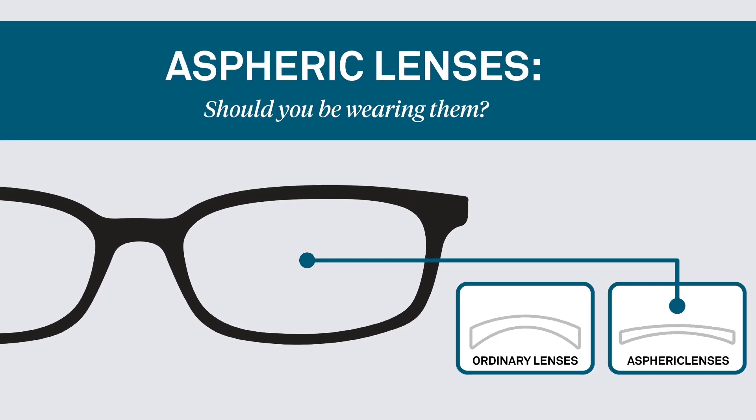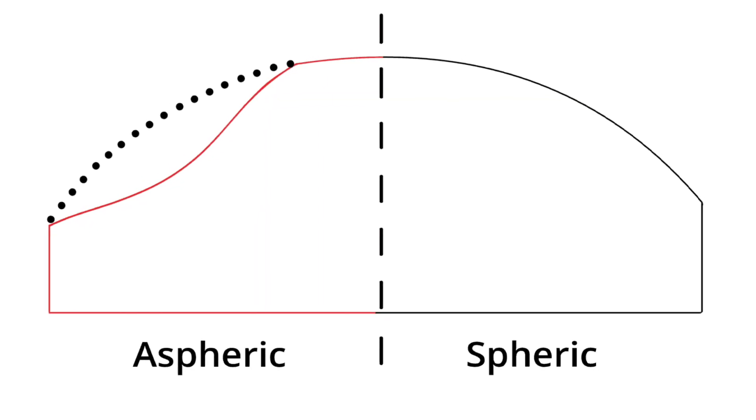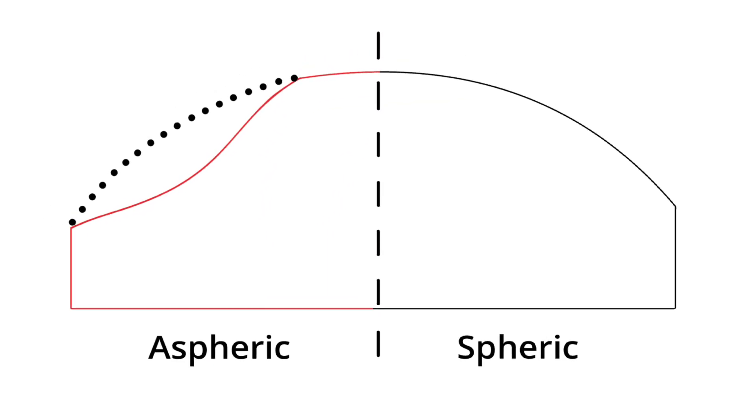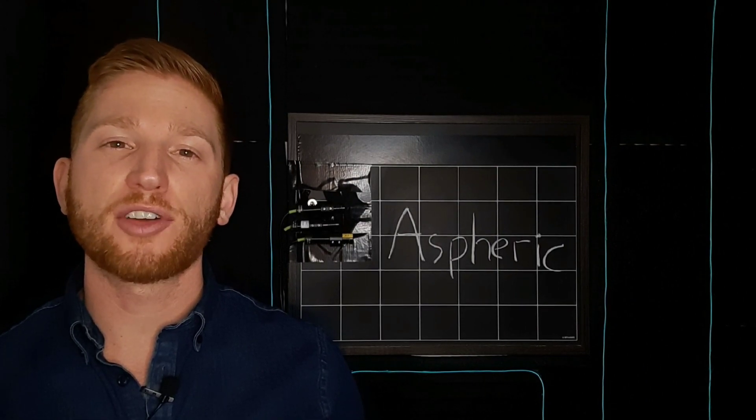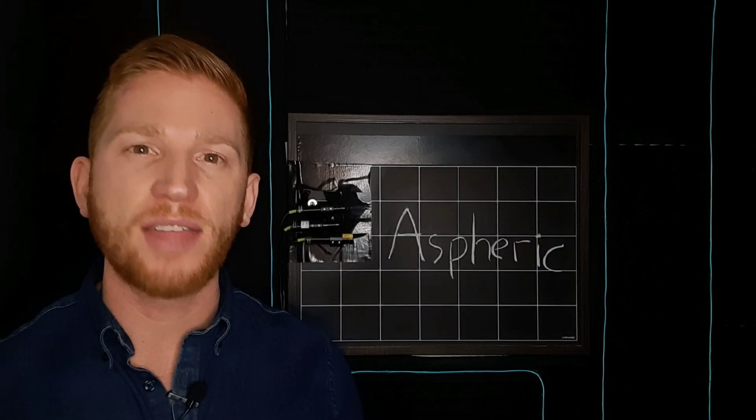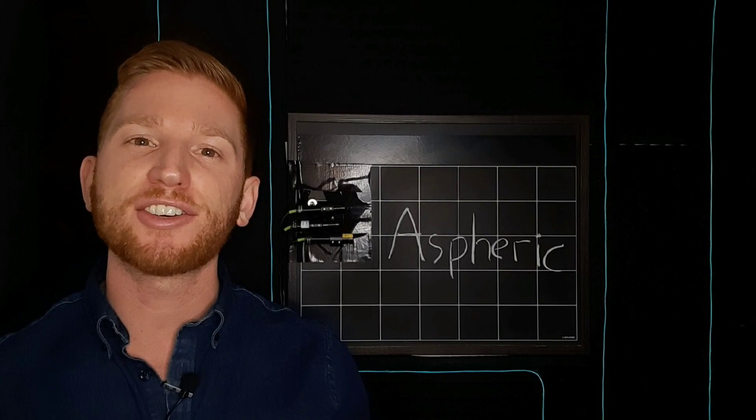Aspheric lenses have a funkier shape, where the curve bends differently across the lens. This does a better job of correcting for your vision errors though, and they result in thinner and lighter lenses.